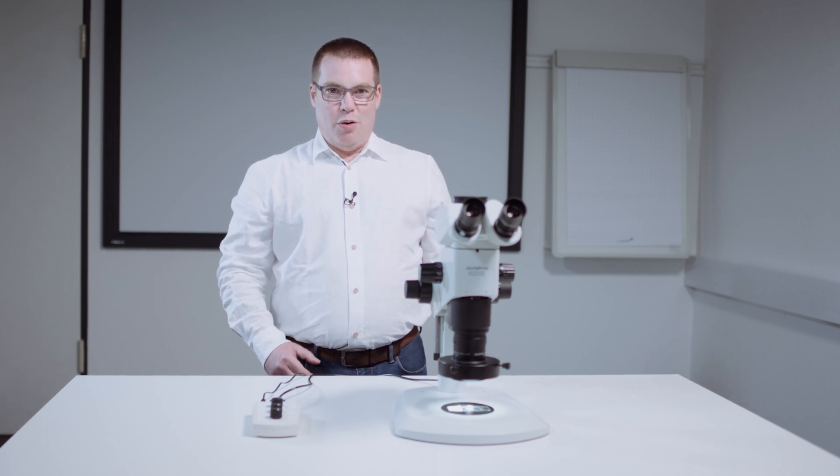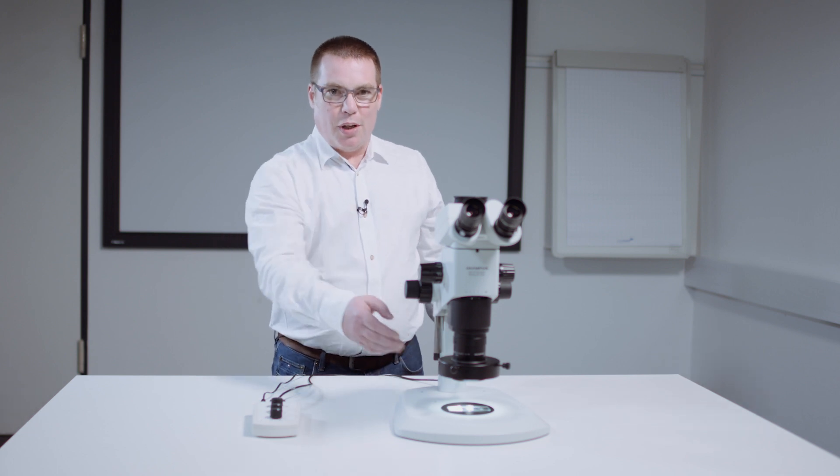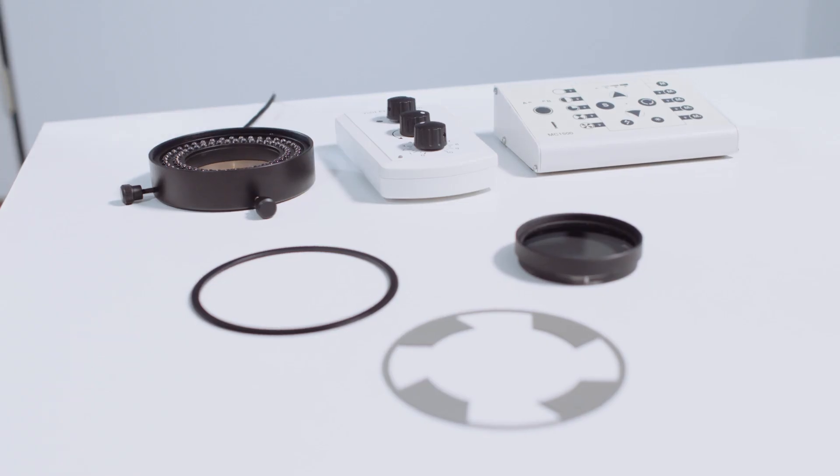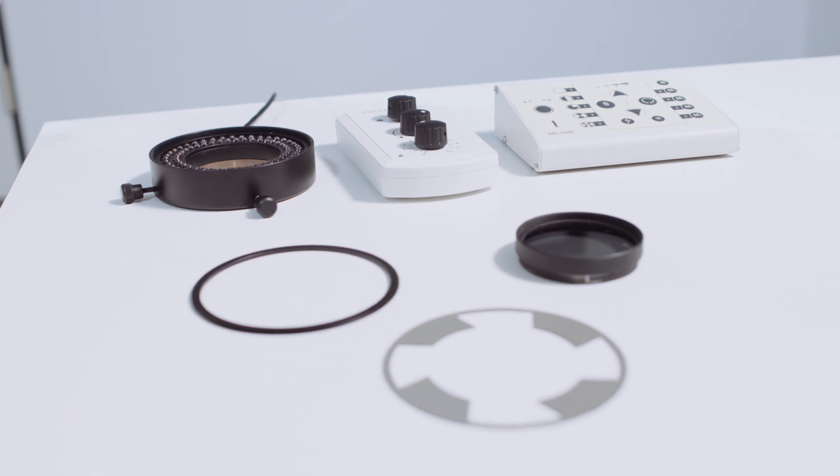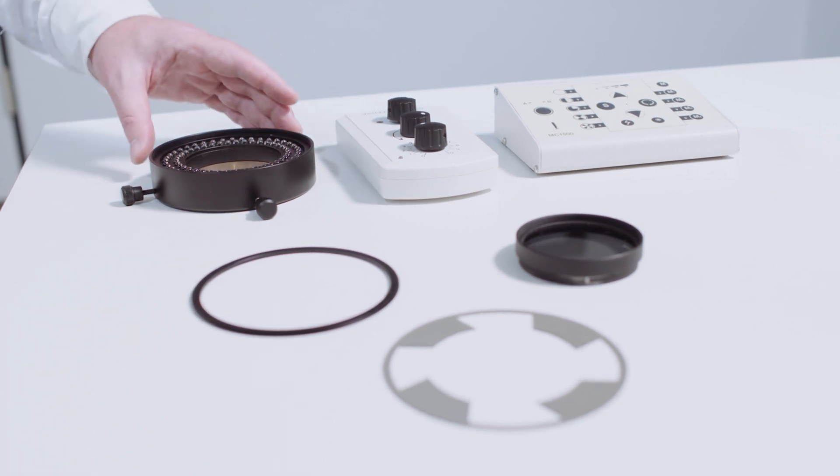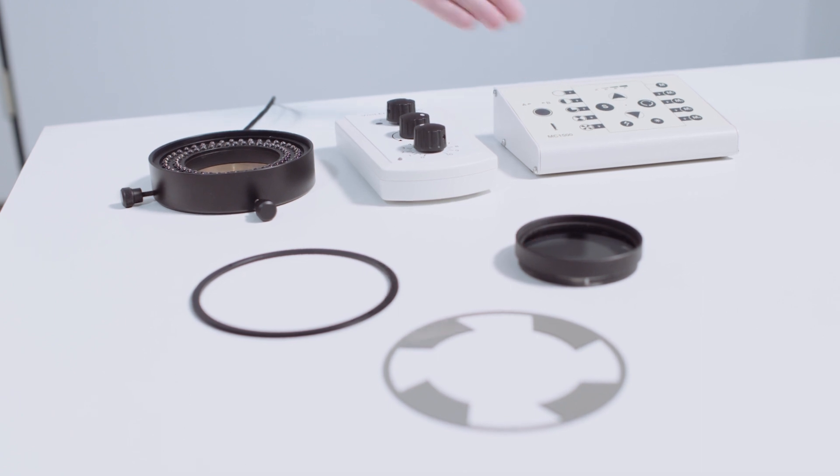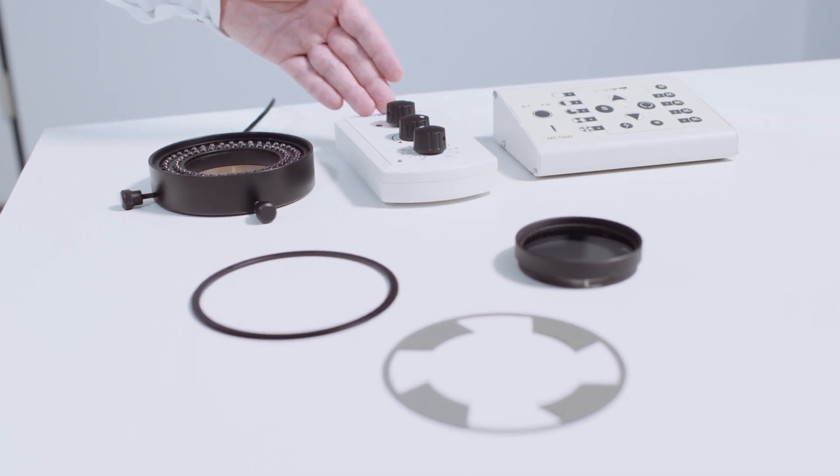Today I would like to introduce you to contrasting using our segmented polarizer set. This set for segmented polarization is designed for a VZLED ring light S8055 in combination with the MC1500 or MC1100 controllers.